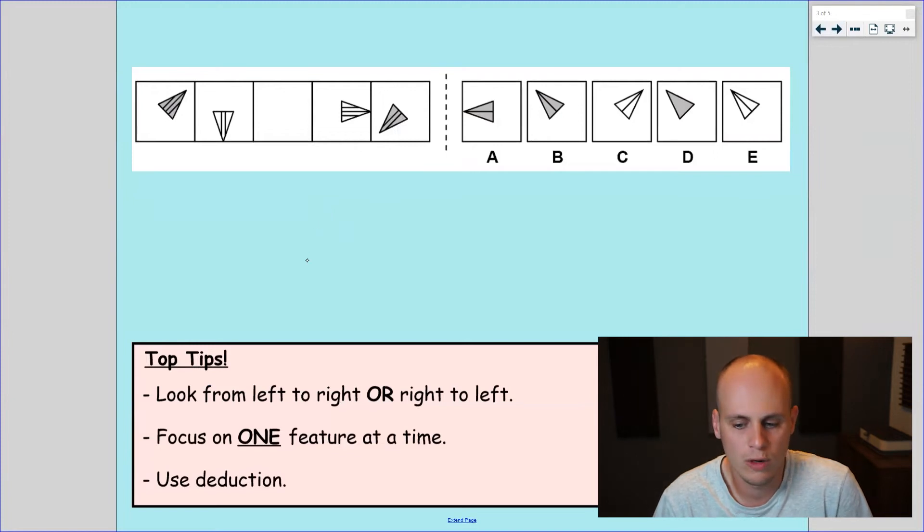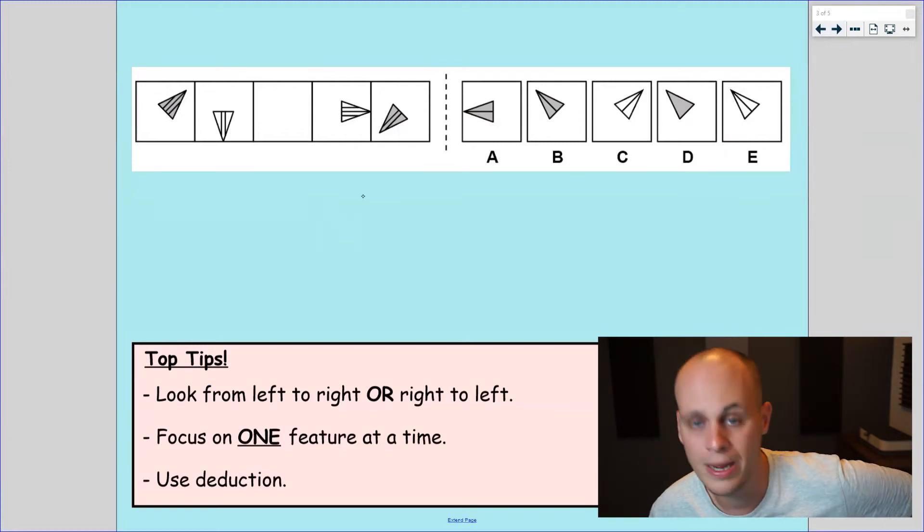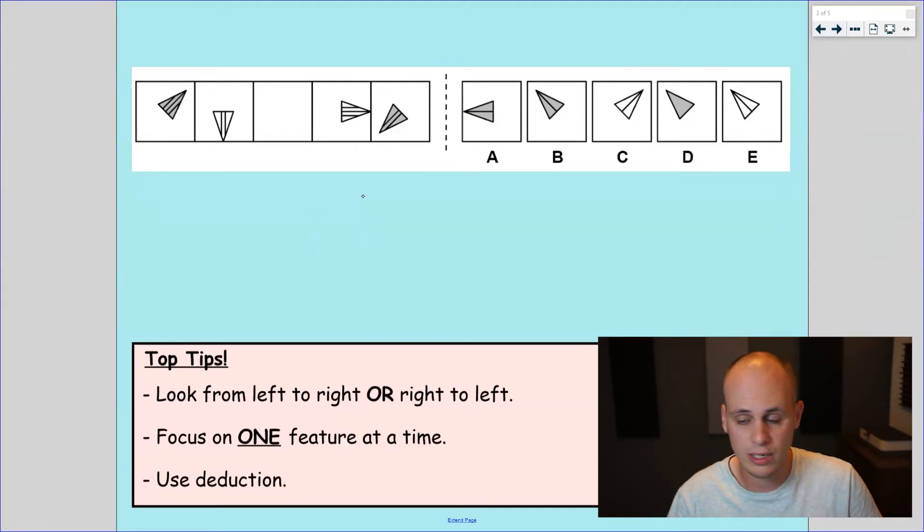Shall we know what to do now? We know to focus on one feature and we know to use deduction. So perhaps we can go a bit quicker. If you want to beat me to it, then why not pause the video and have a go? So in this one, what should we focus on first? I think we should focus on the shading because it's quite clearly from this going gray, white, gray, white, gray. So it's going to be gray. So I can straight away get rid of the two white shaded ones.